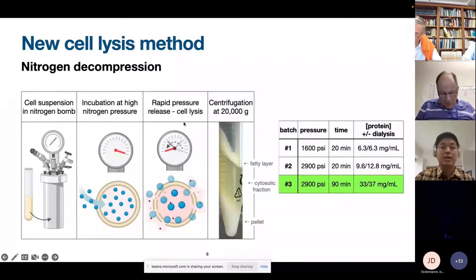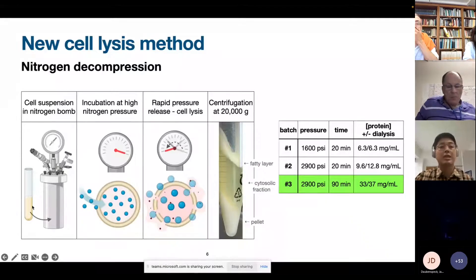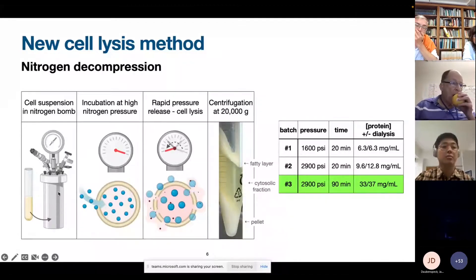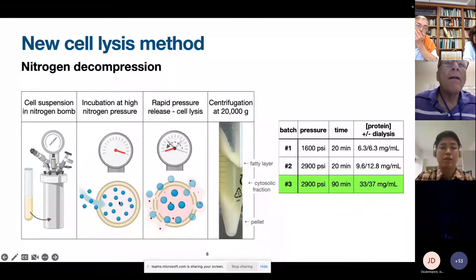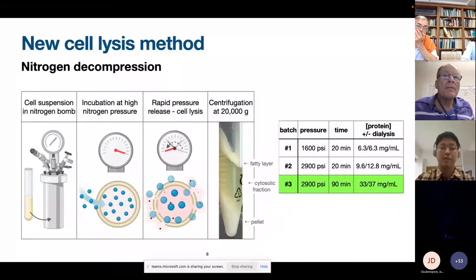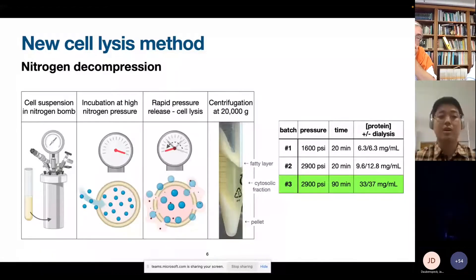So in this technique, we just incubate the cell suspension into this nitrogen bomb. We increase the pressure of the nitrogen into really high pressures, for example, until 3000 psi. And this allows the nitrogen to be dissolved inside the cells. And a rapid release of the pressure makes all the cells to burst. And then we just spin down all this, the cell lysate, and then we can isolate only the cytoplasmic or cytosolic fraction.